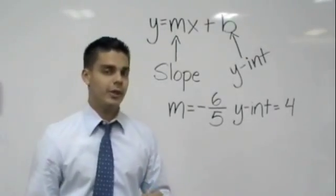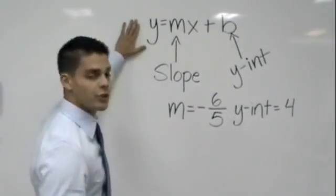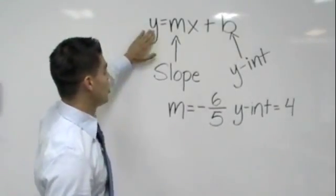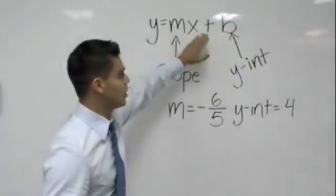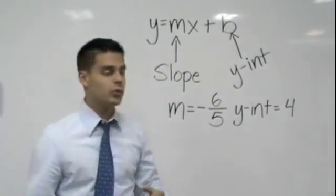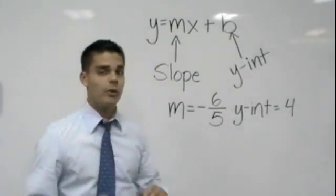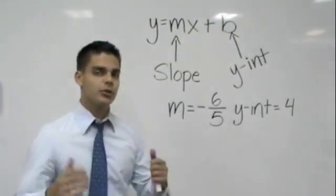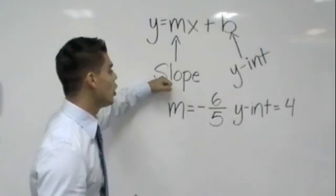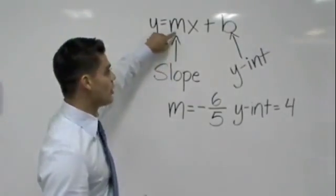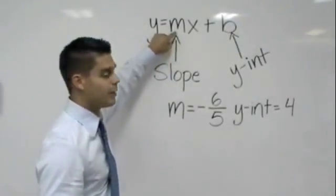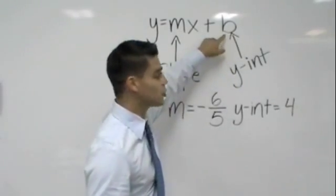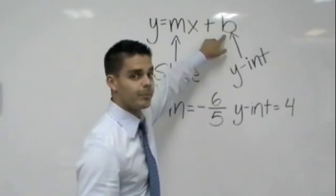So why do I want to find those two things? When we write the equation of a line, we're always going to use this same formula, which is y equals mx plus b. Always going to use y equals mx plus b when we're trying to write it in slope-intercept form. Why do you think it's called slope-intercept form? Well, it's because it's got the slope, which is always going to be represented by m, and it also has our y-intercept, which is also always represented by b.